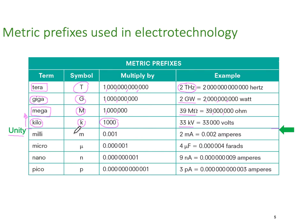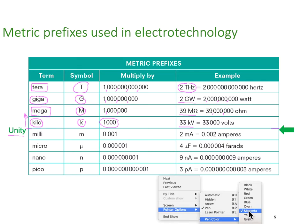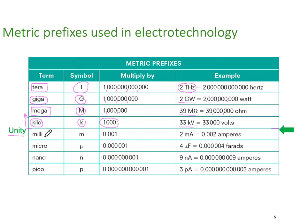So we've got kilos, megas, gigas and terras. So let's go down in the opposite direction.